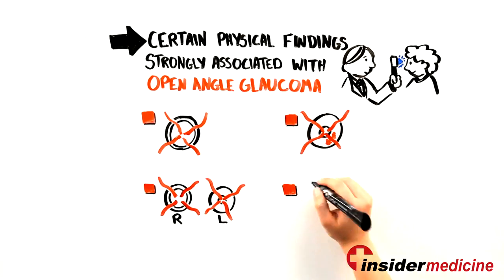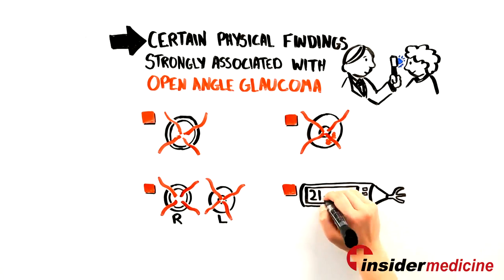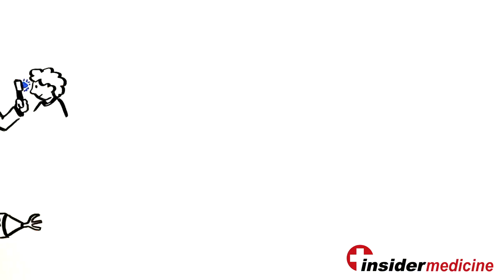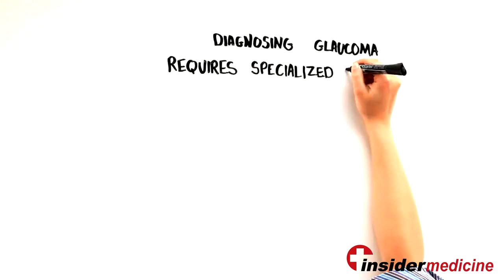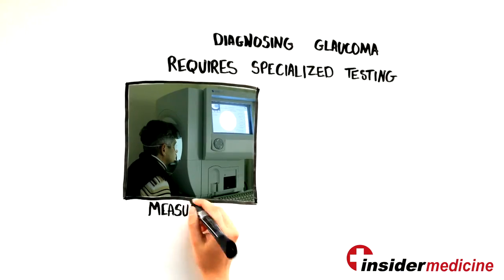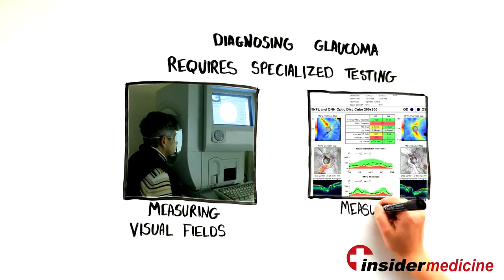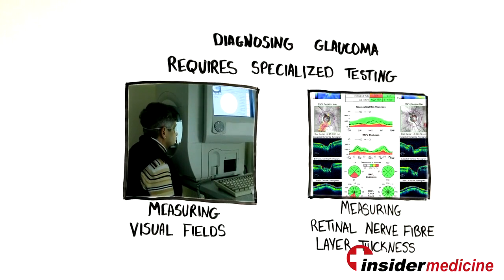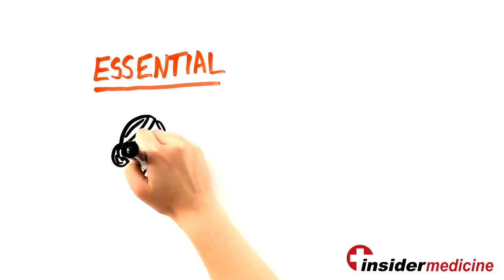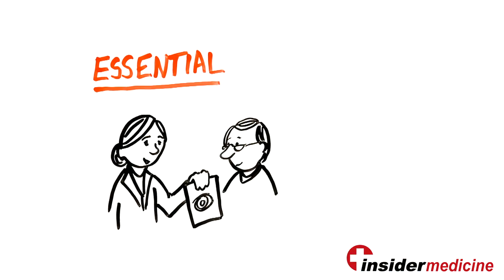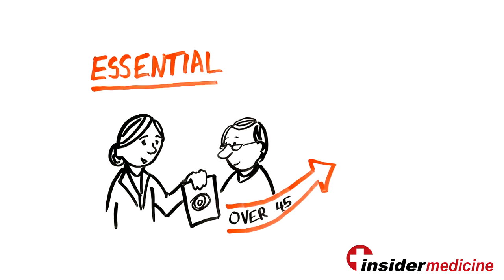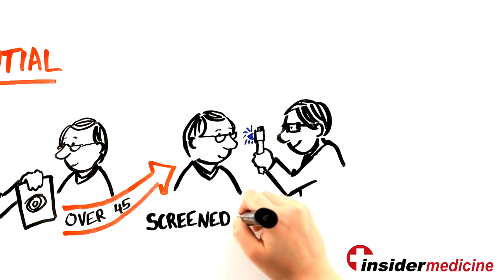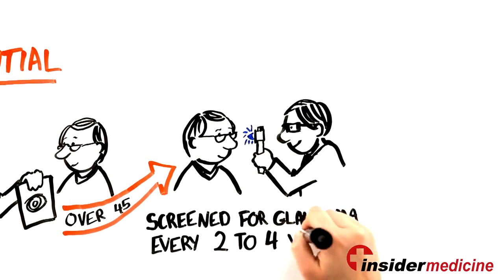Because diagnosing glaucoma requires specialized testing, including measuring visual fields and retinal nerve fiber layer thickness, it is essential that generalist physicians direct any patient over the age of 45 to be periodically screened for glaucoma, typically every two to four years.